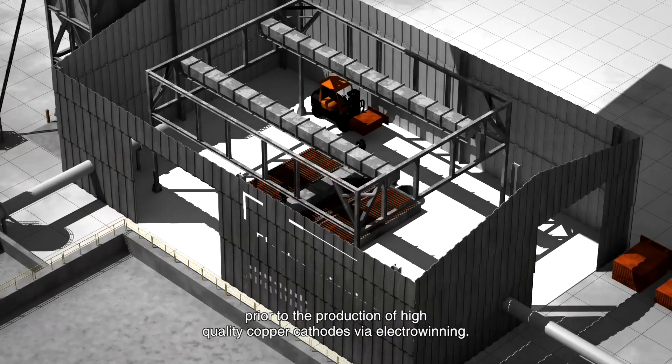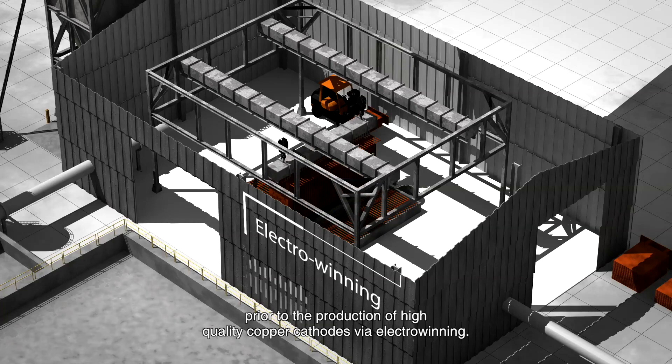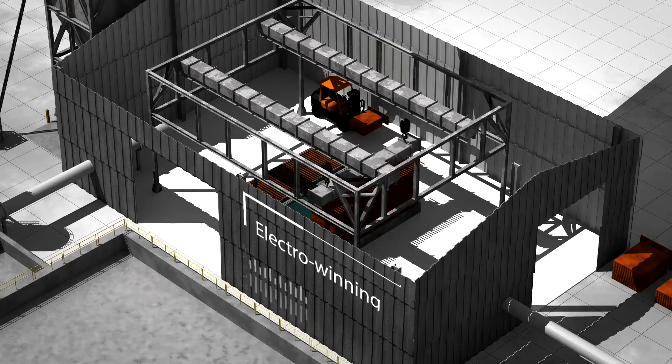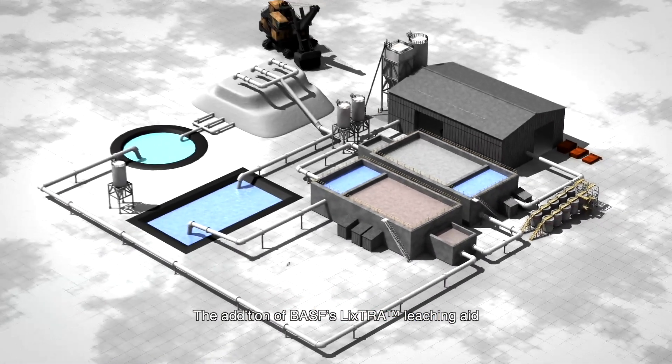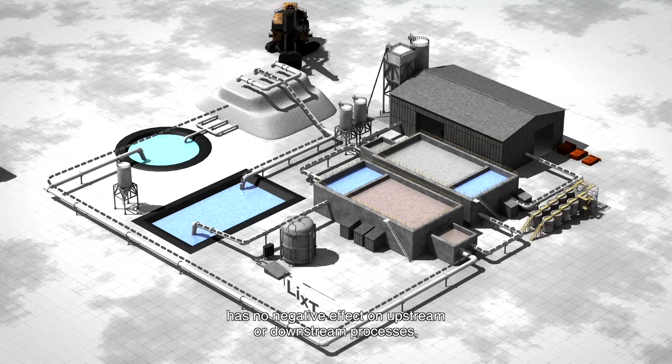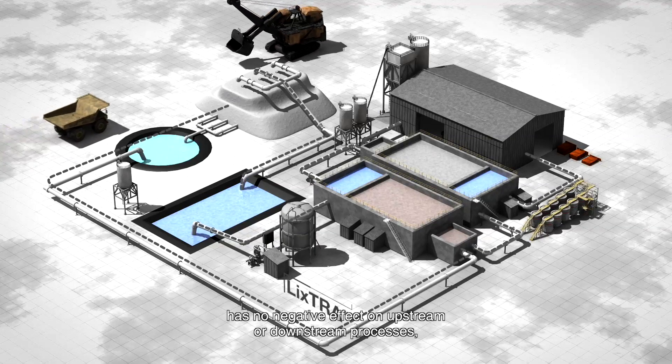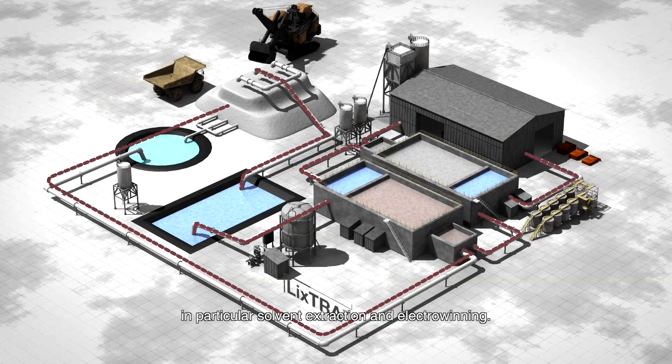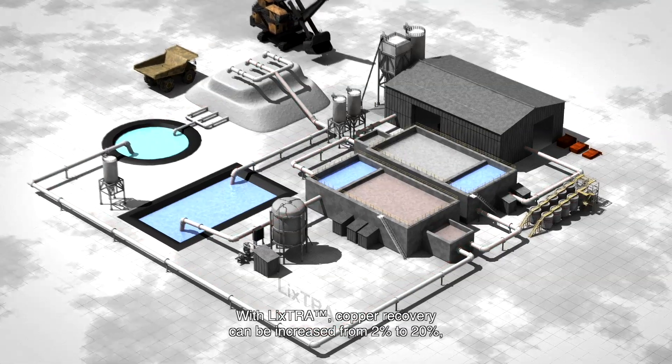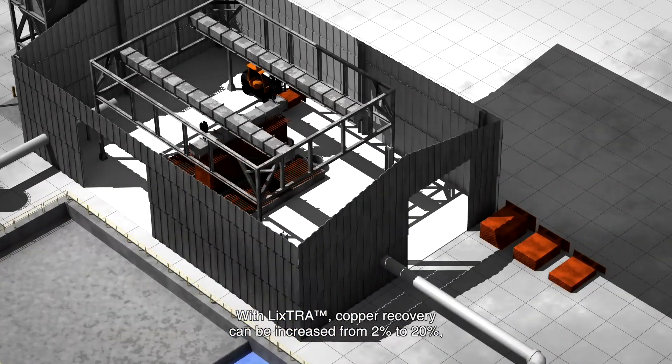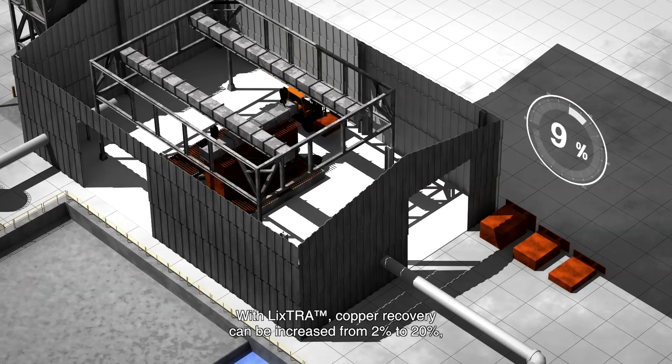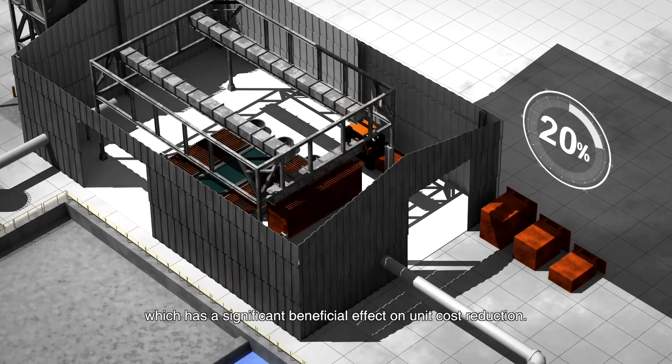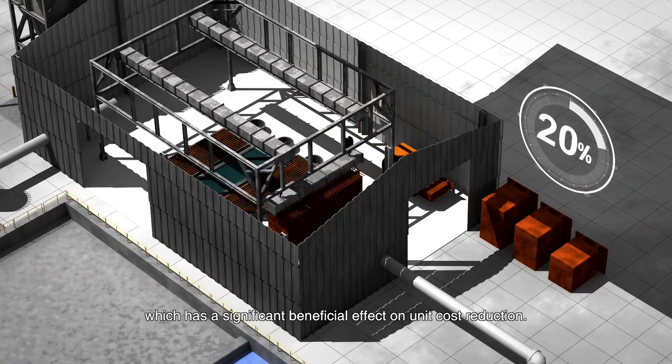Prior to the production of high-quality copper cathodes via electrowinning, the addition of BASF's lixtra leaching aid has no negative effect on upstream or downstream processes, in particular solvent extraction and electrowinning. With lixtra, copper recovery can be increased from 2% to 20%, which has a significant beneficial effect on unit cost reduction.